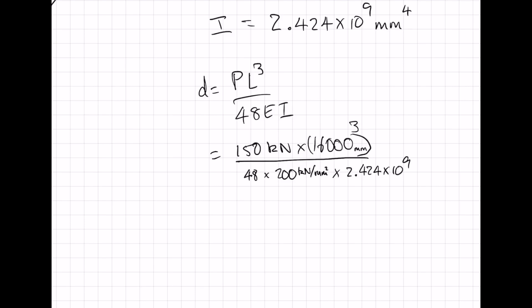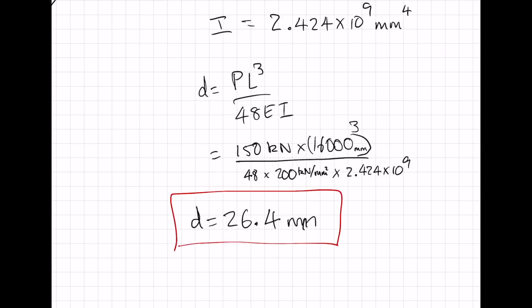Let's do the full calculation: 16,000 to the power of 3 times 150, divided by 48, divided by 200, divided by 2.424 times 10 to the power of 9. D equals 26.4 millimeters. That is our final answer.